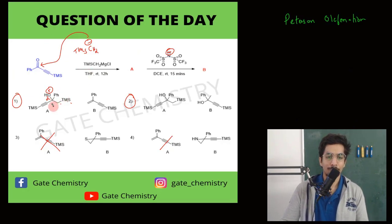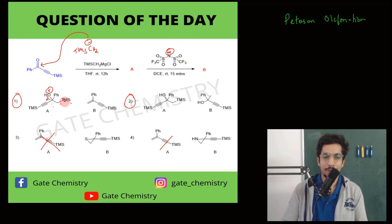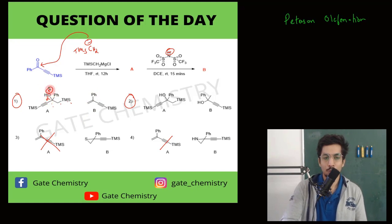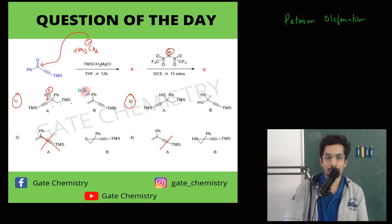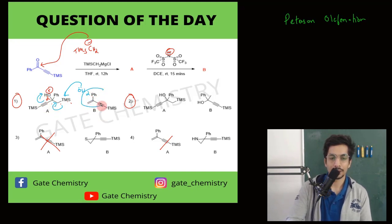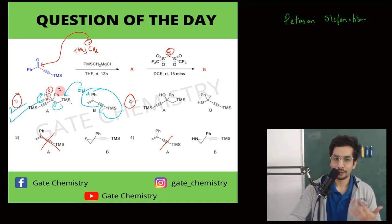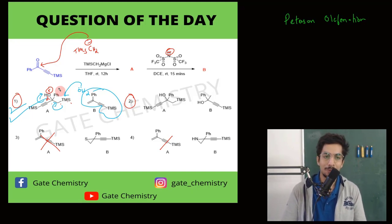Coming back to the original question: we're adding a Brønsted acid, so these are acidic conditions. However, since the product is a terminal alkene, cis/trans stereochemistry doesn't matter here. The OH gets protonated, an excess water molecule attacks the silicon, the bond migrates, water is eliminated, and we end up with the terminal alkene. The correct answer is option number one.